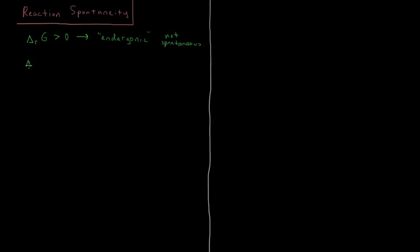Alternatively, if the Gibbs energy is less than zero for a reaction, then we say that it is exergonic — that's like the analog of exothermic but for Gibbs energy — and that reaction is going to be spontaneous in the forward direction.